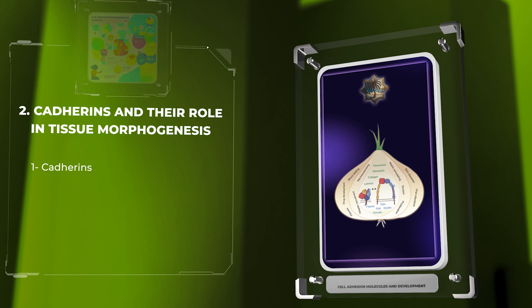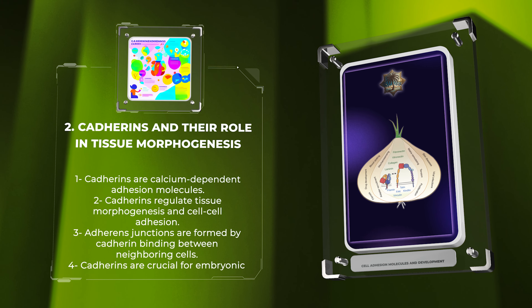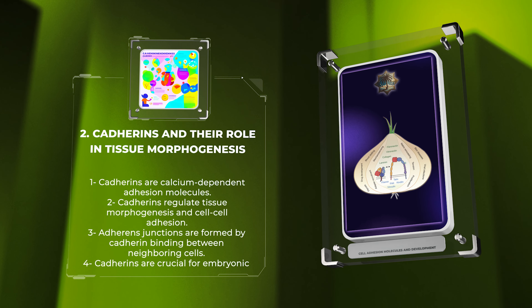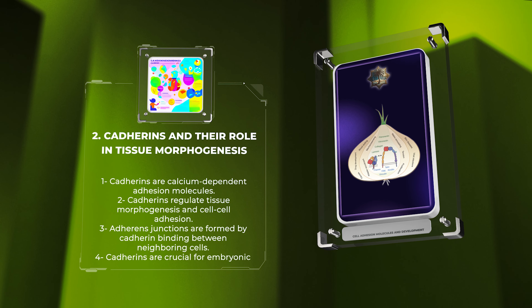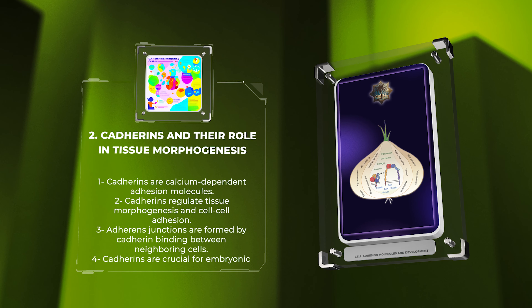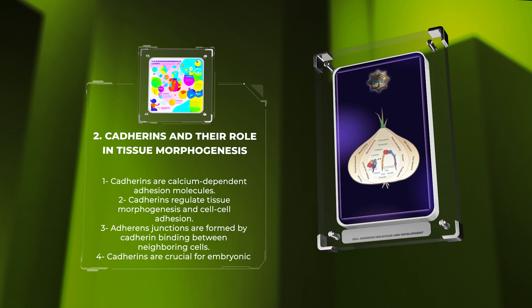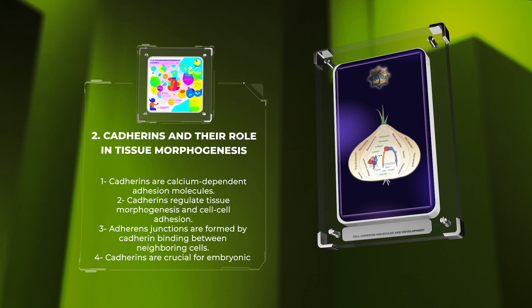Cadherins are a class of calcium-dependent adhesion molecules that regulate tissue morphogenesis. They are primarily involved in cell-cell adhesion and are crucial for the maintenance of tissue integrity. The binding of cadherins between neighboring cells forms adherens junctions, which facilitate cell cohesion and communication. Cadherins are crucial for embryonic development, organogenesis, and the establishment of tissue architecture.